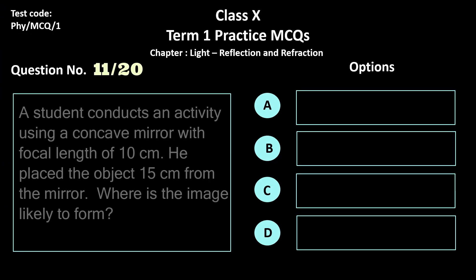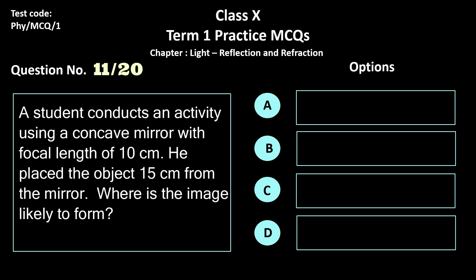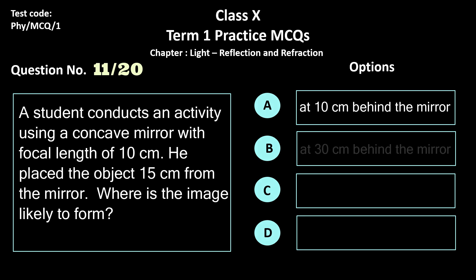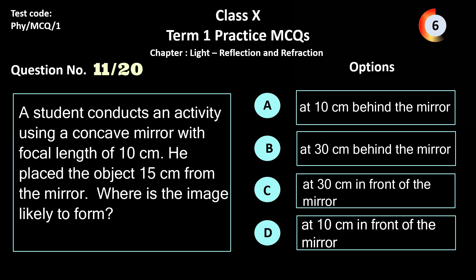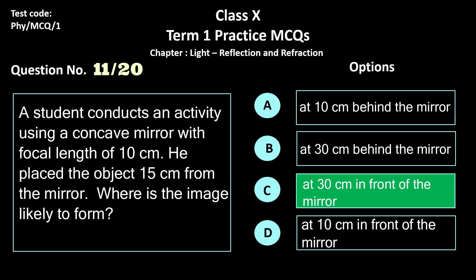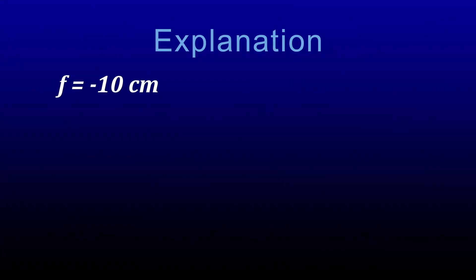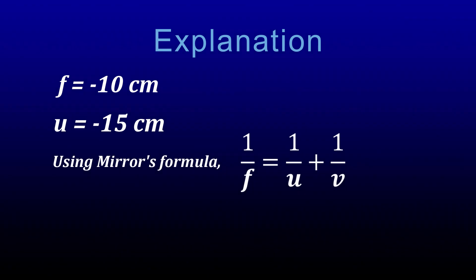Question 11. A student conducts an activity using a concave mirror with focal length of 10 cm. He placed the object 15 cm from the mirror. Where is the image likely to form? Options: a) at 10 cm behind the mirror, b) at 30 cm behind the mirror, c) at 30 cm in front of the mirror, and d) at 10 cm in front of the mirror. The correct answer is c, at 30 cm in front of the mirror. Focal length = −10 cm, object distance u = −15 cm; using the mirror formula, v = −30 cm, meaning 30 cm in front of the mirror.